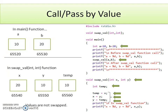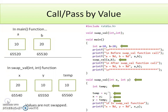This demonstrates the previous statement: by passing values to the function, there is no change in the calling function. The changes happen only with the formal arguments inside the called function; the actual arguments a and b remain as they are. This means that by calling a function by value, the changes done within the function are not reflected in the calling function. Friends, try this program yourself and check whether the values will get changed in the calling function or not. Check the output before and after the swap value function call. Thank you.